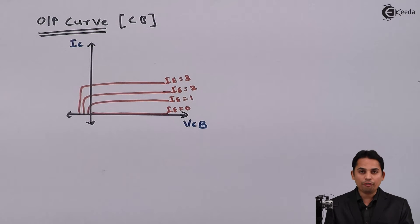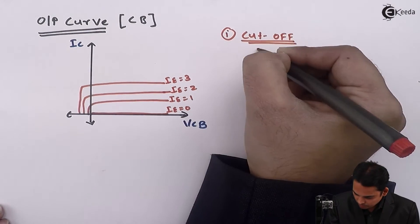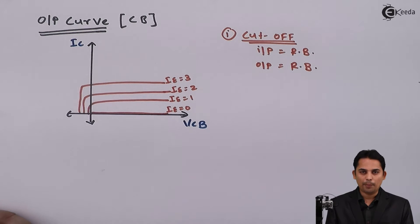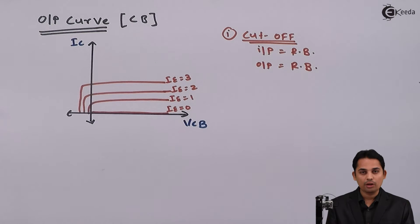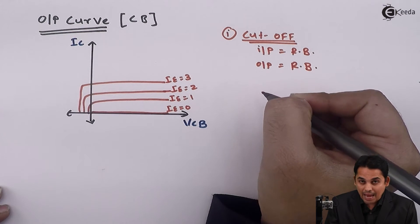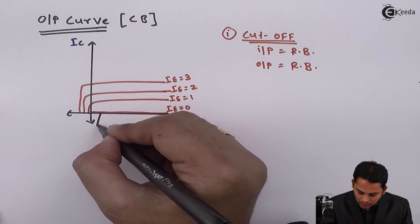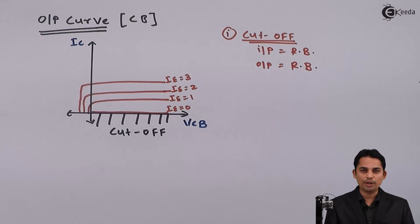The cutoff region is the region in which input and output both are reverse biased. Since both are reverse biased, majority carrier current is equal to zero. For a common base amplifier, it is seen that minority carrier current is also equal to zero. So majority current as well as minority current is equal to zero, and hence we get the cutoff region at this position. This is the cutoff region for common base configuration.